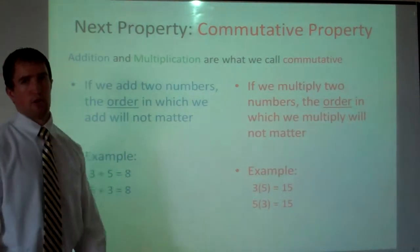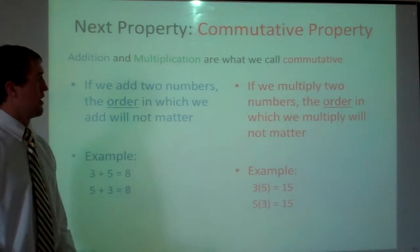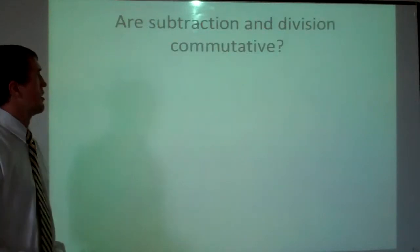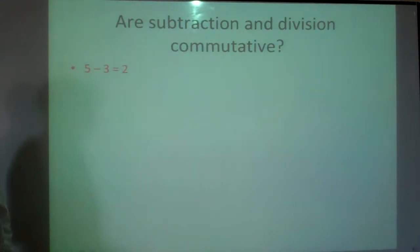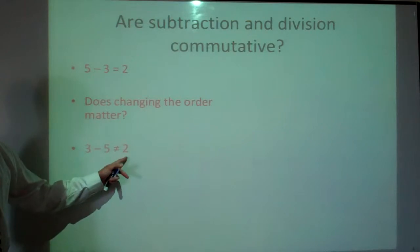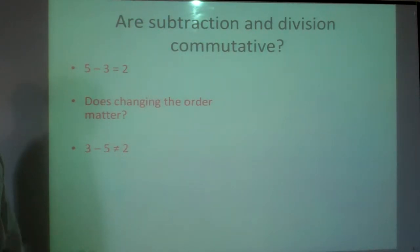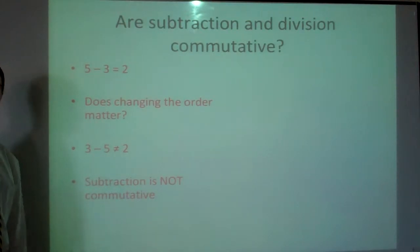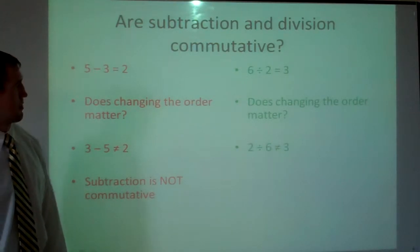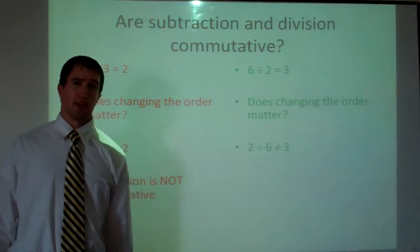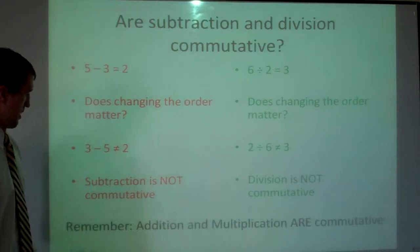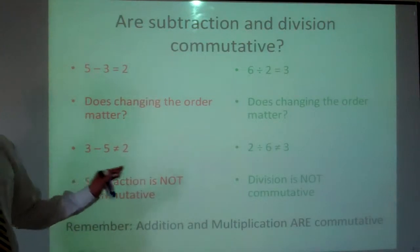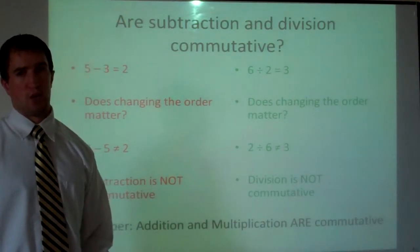The big thing with commutative property is order — the order in which we add or multiply will not matter. But are subtraction and division commutative? Five minus three equals two, but three minus five does not equal two — it equals negative two. So subtraction is not commutative. Nor is division, because six divided by two equals three, but two divided by six equals one third, not three. Addition and multiplication are commutative, but subtraction and division are not.